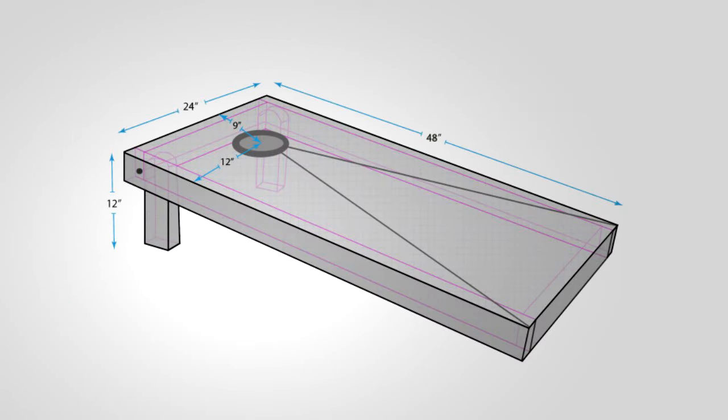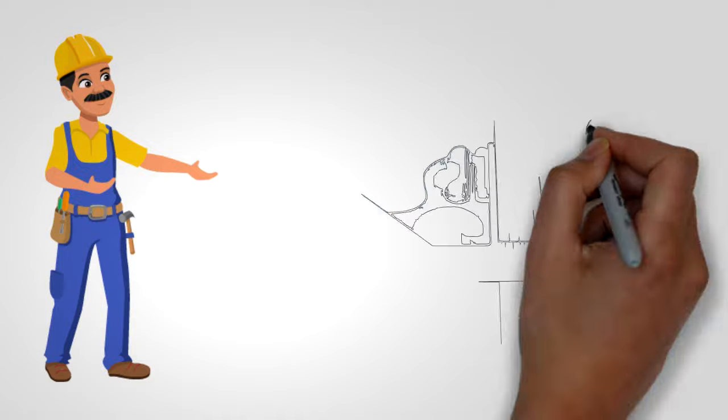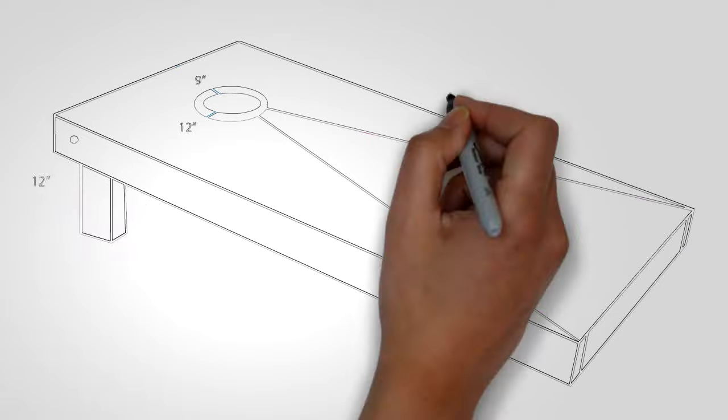Line up the frame sections. Use two 3 inch deck screws to attach the corners. Attach the plywood deck to the frame with 1 and 1 quarter inch finish screws.